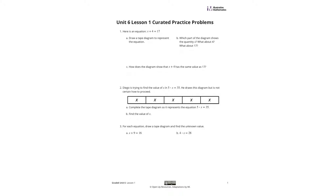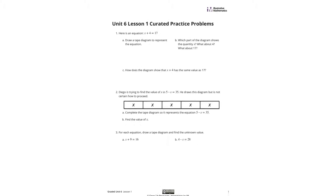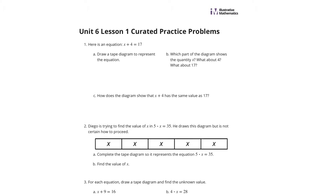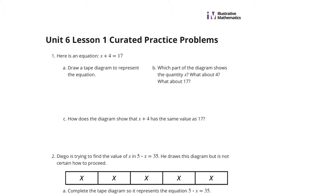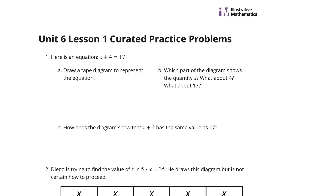Here is an equation: x plus 4 equals 17. In part A we're going to draw a tape diagram to represent the equation. Part B: which part of the diagram shows the quantity x? What about 4? What about 17? And then how does the diagram show that x plus 4 has the same value as 17?